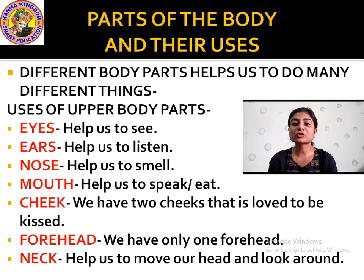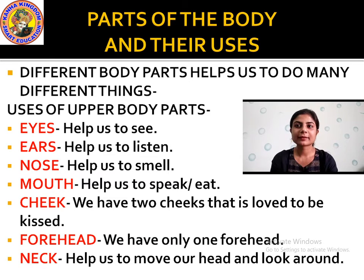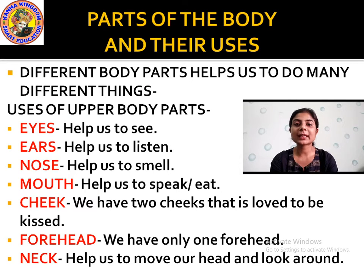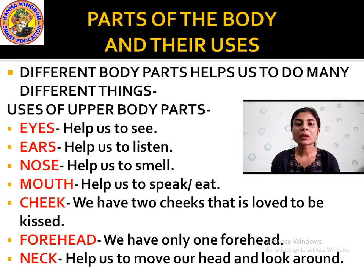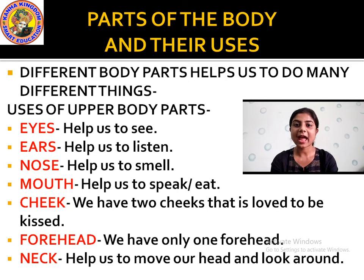Mouth helps us to speak or eat — with the help of the mouth, we can speak and we can eat. We have two cheeks. Then forehead — we have only one forehead. Then neck, which helps us to move our head and look around. These are the uses of upper body parts.